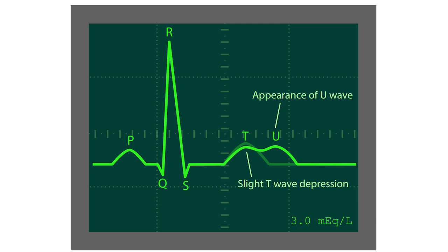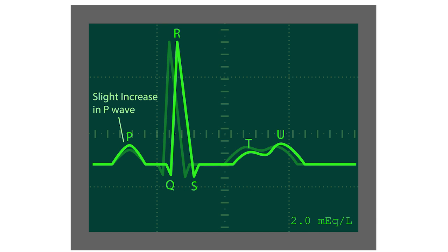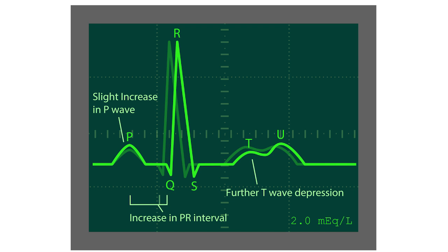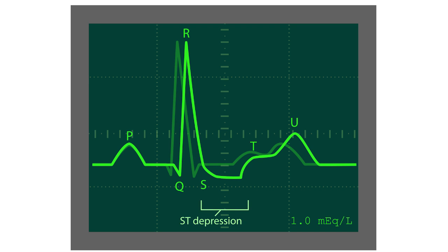When serum potassium is lowered to 2 milliequivalents, we see a slight increase in the P wave and an increase in the PR interval, the further depression of the T wave, and a further increase in the U wave. And finally, when serum potassium is lowered to 1 milliequivalent, we see the ST interval becoming depressed and the further increase in the U wave.